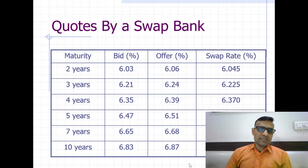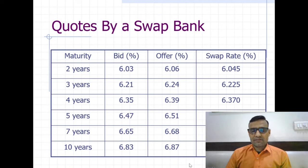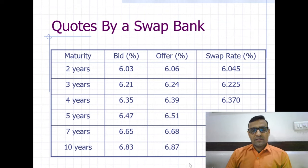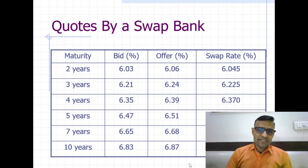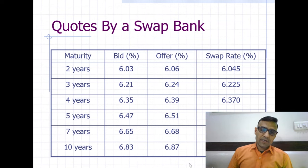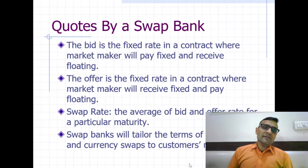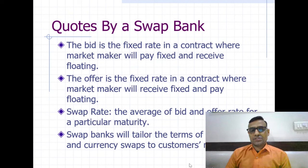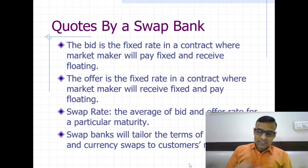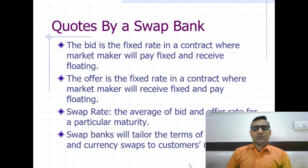Swap banks give readily available quotes to clients for various maturities. The table on the screen shows various maturities with the bid rates and offer rates quoted by swap banks. These rates are available readily with any commercial bank. Swap rate is the average of the bid and offer rates, normally used to value swap contracts — for example, if you want to value a 5-year maturity swap contract after 1 year, these swap rates are used for that purpose.